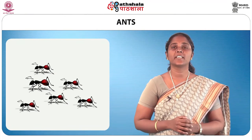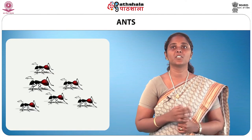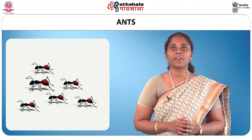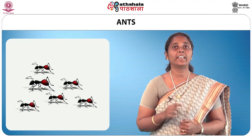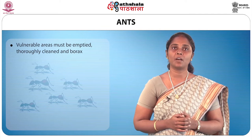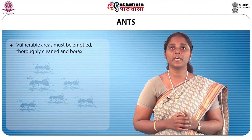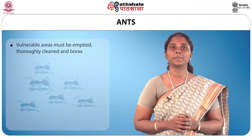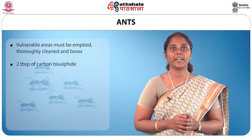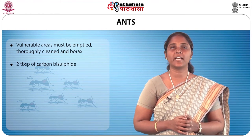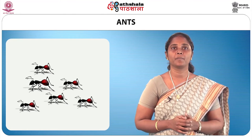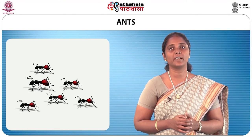Ants: these insects generally invade in large numbers in search of food, especially sweets. They enter through crevices along a definite track in procession and can be systematically trapped at the ground where they enter. To prevent ants, vulnerable areas must be emptied thoroughly, cleaned, and borax spread over the shelf until they cease to come. If a nest is found, it can be destroyed by placing two tablespoons of carbon bisulphide at the entrance, as the vapour kills the ants — but it is highly inflammable and must be used with great care. Boiling water poured over the nest repeatedly also kills ants.